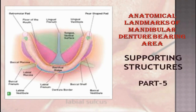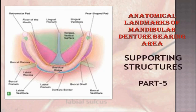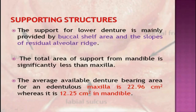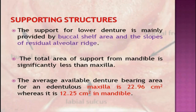In the last four parts, I covered the anatomical landmarks of the maxillary arch and the limiting structures of the mandibular arch. In this part, I'll be talking about the supporting structures of the mandibular arch. The support for the lower denture is mainly provided by the buccal shelf area and the slopes of the residual alveolar ridge. The total area of support from the mandible is significantly less than the maxilla. The average available denture-bearing area for an edentulous maxilla is 22.96 cm², whereas it is 12.25 cm² in the mandible — almost double.